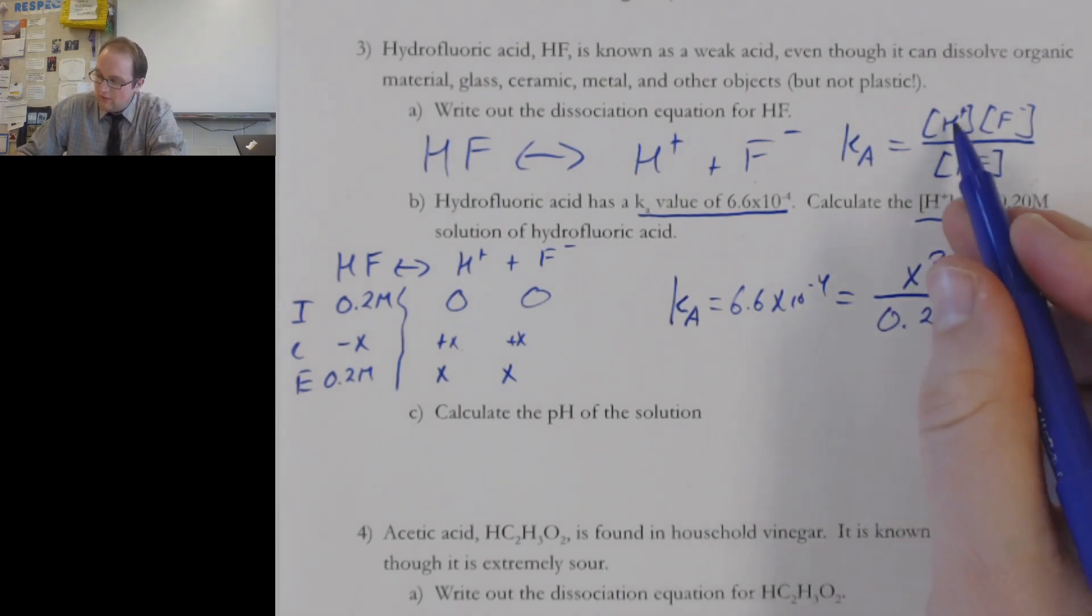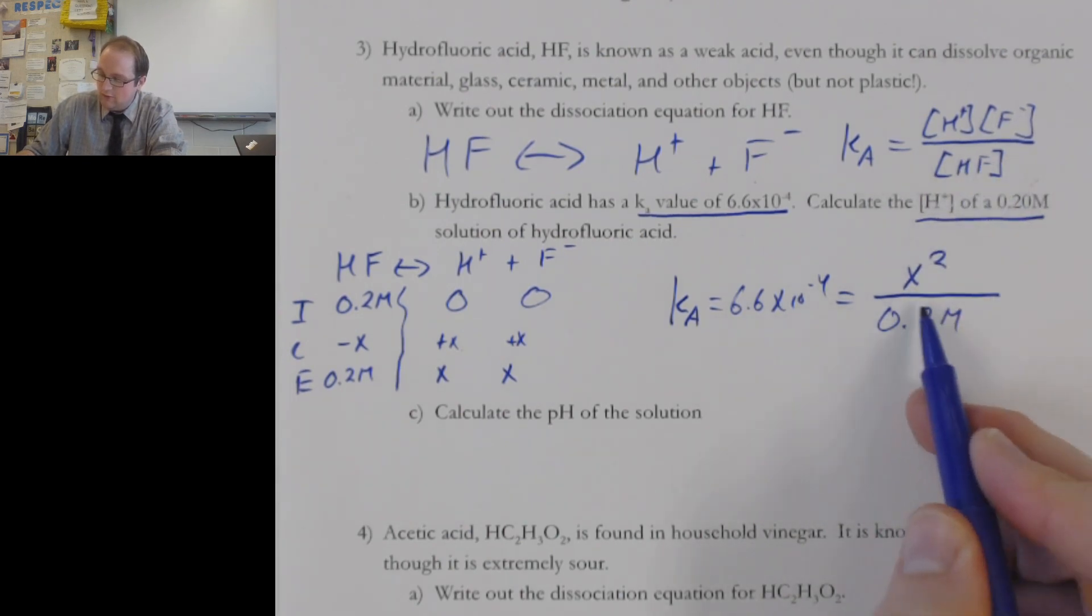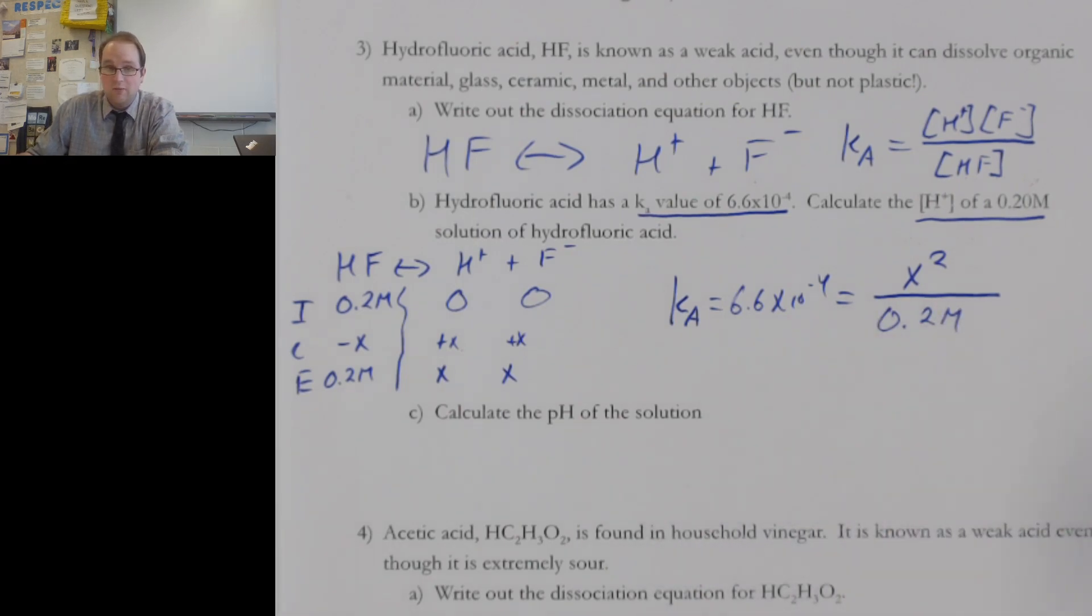over the top of 0.2 molar. Because I have X for H plus times X for F minus, so X squared. And the HF concentration we know is going to be just about 0.2 molar.